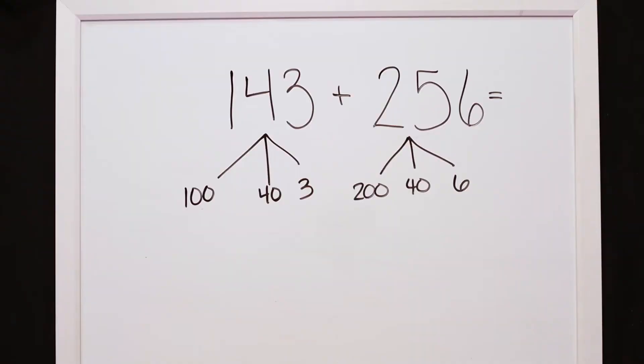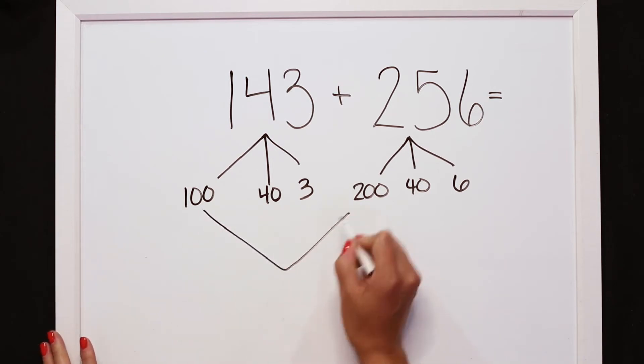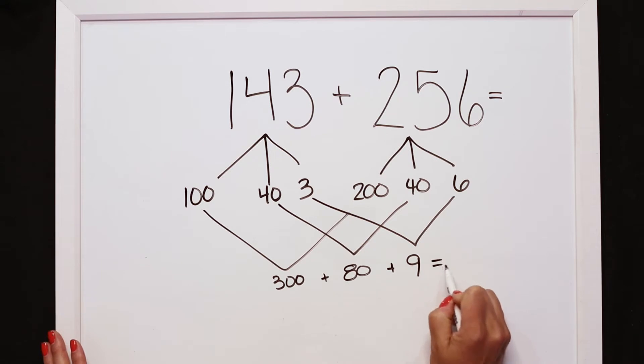Now I'm going to show you how ValuePack used partial sums to solve that. Using our strategy of partial sums, I can go ahead and start with adding my 100 and my 200 to get 300 just like ValuePack did. Now adding my tens, 40 plus 40 equals 80, and my ones, 3 plus 6 equals 9. Now I just have to add those three together to get 389.